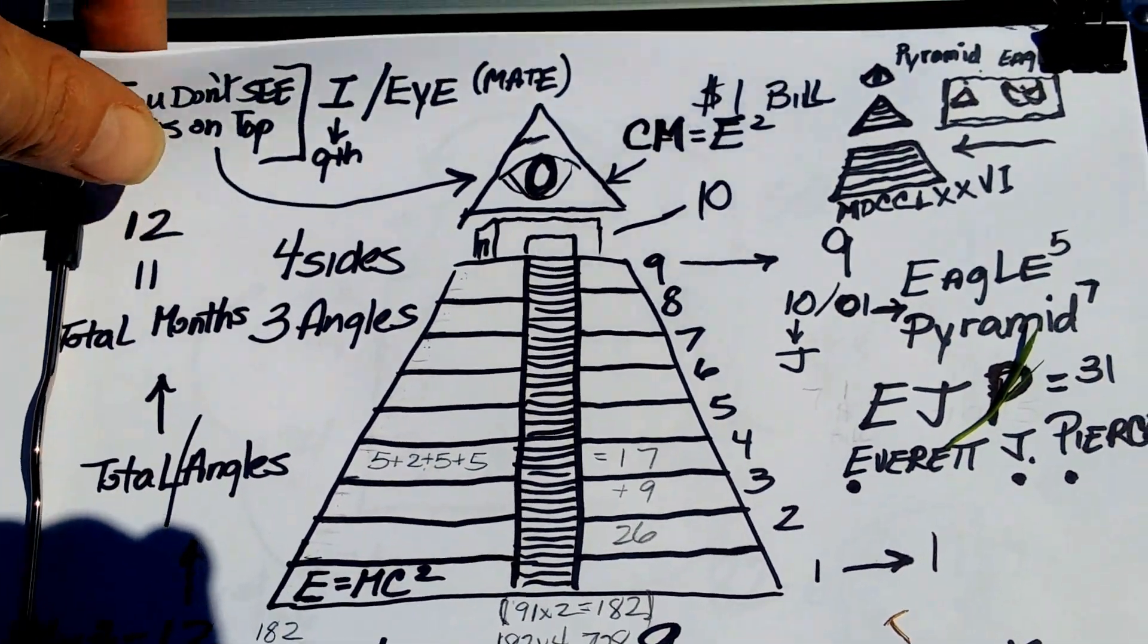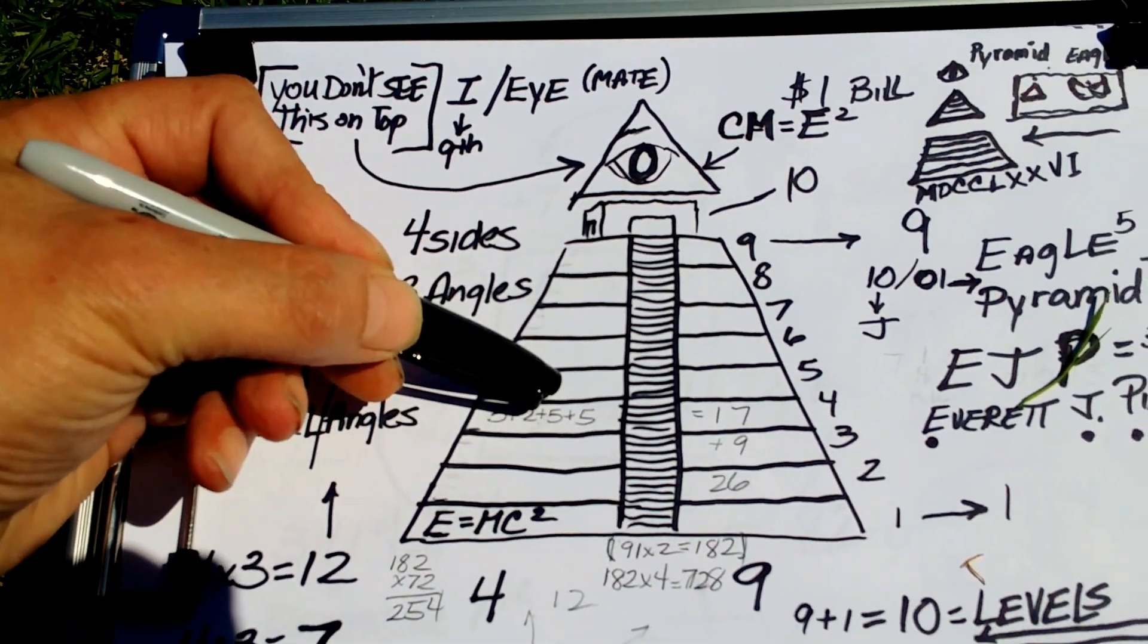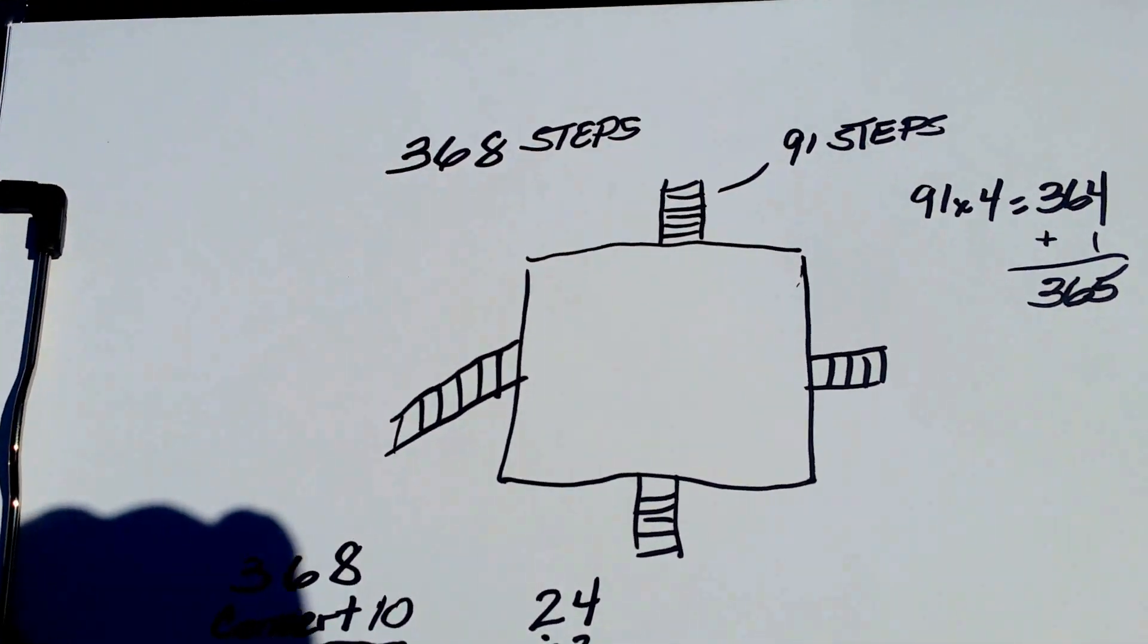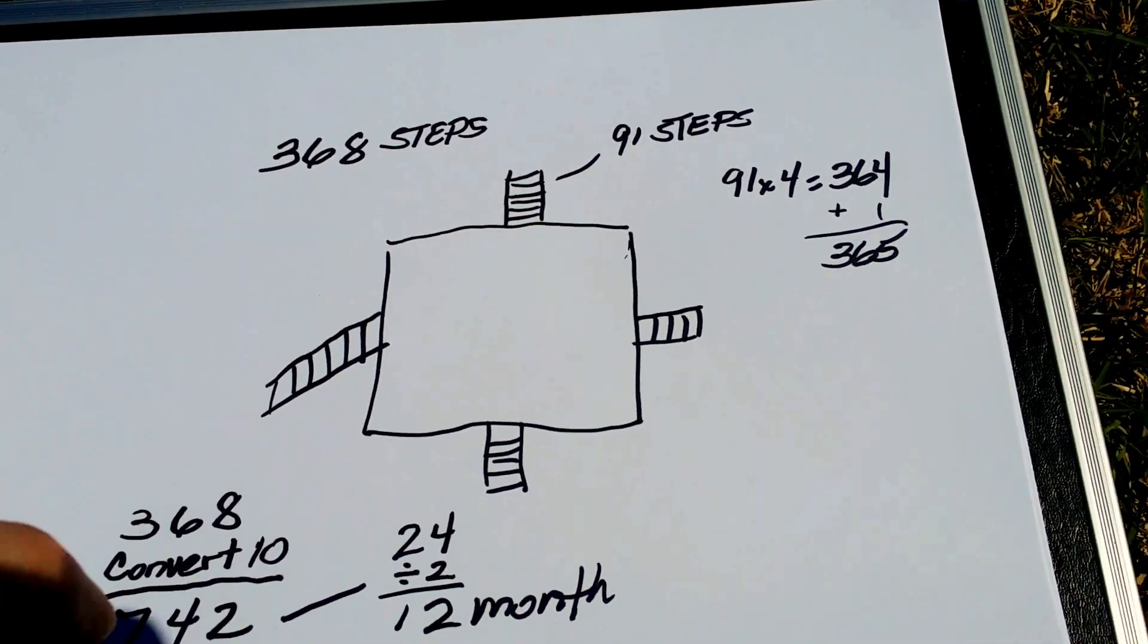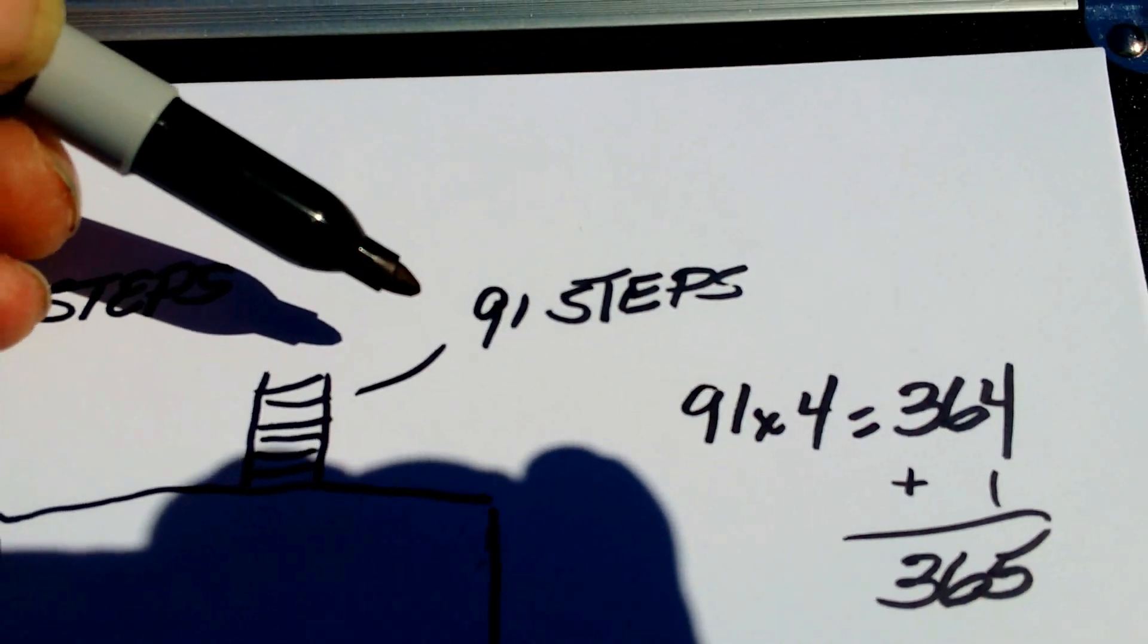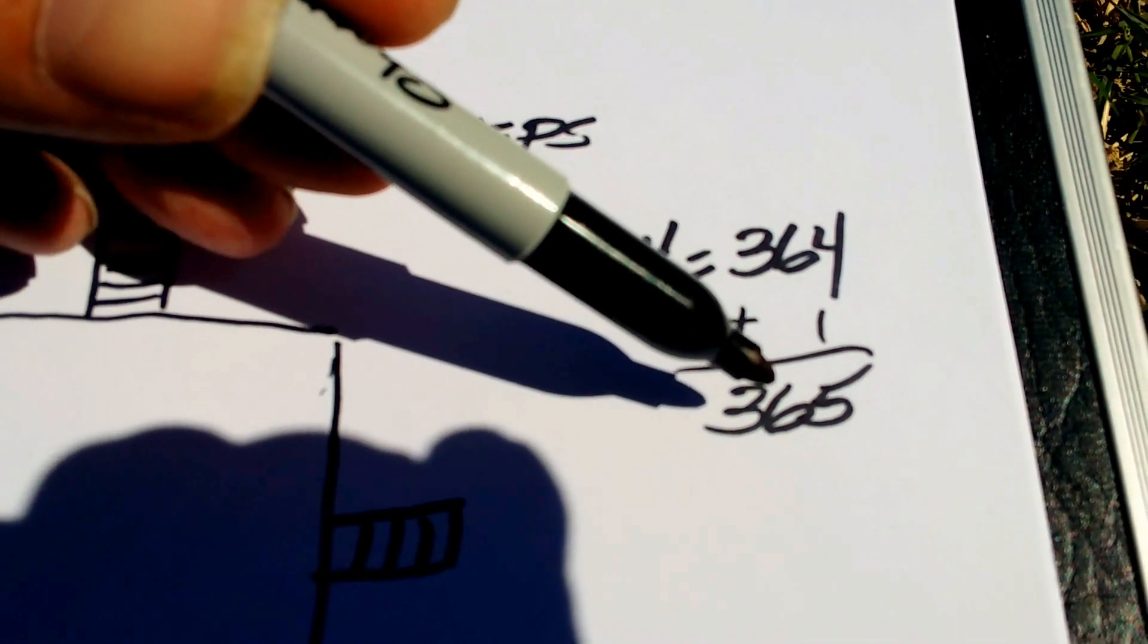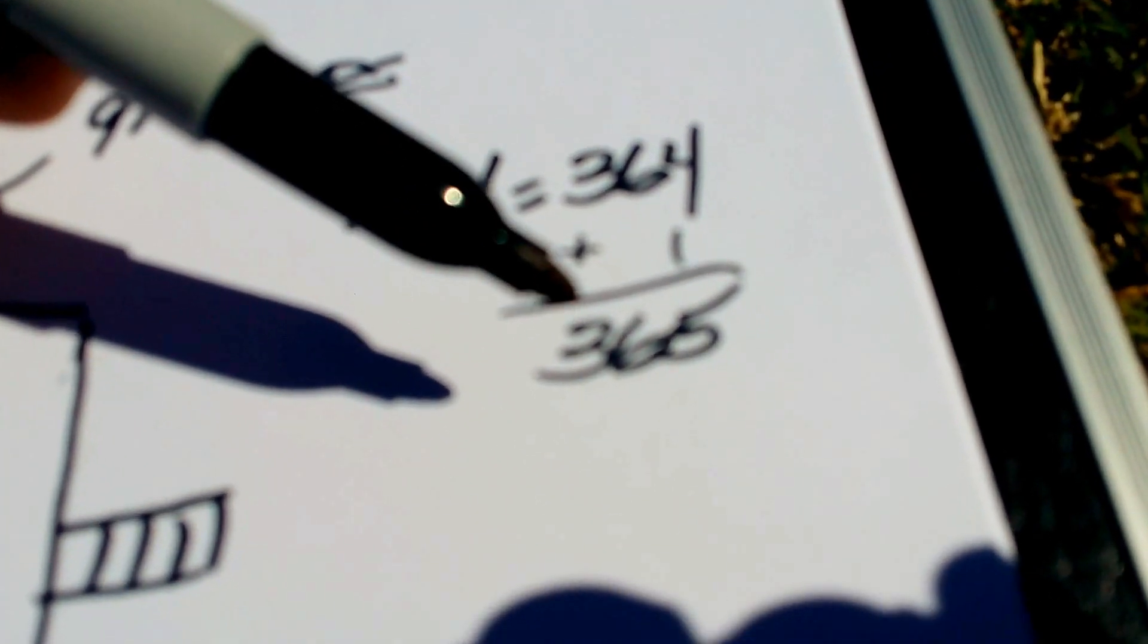In a brief summary of part three of the secrets of E equals MC squared and how it ties into this, let's quickly go into how we come up with our months and days and years. If we look at the top of the pyramid, there's 91 steps. If you take 91 steps times 4, that's 364, plus one more step, that's 365. That gives us an idea of 365 days of the year.